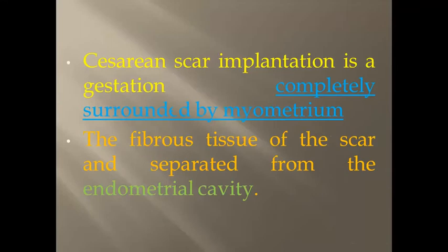Cesarean scar ectopic pregnancy is where the implantation occurs completely in the area of the cesarean scar, completely surrounded by myometrium, and there is fibrous tissue separating it from the endometrial cavity.